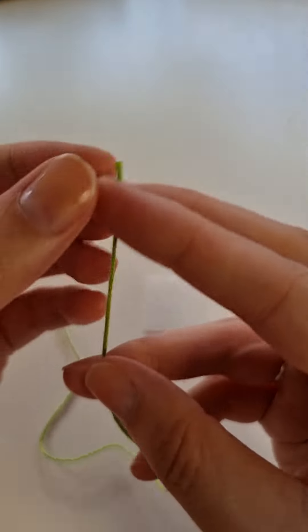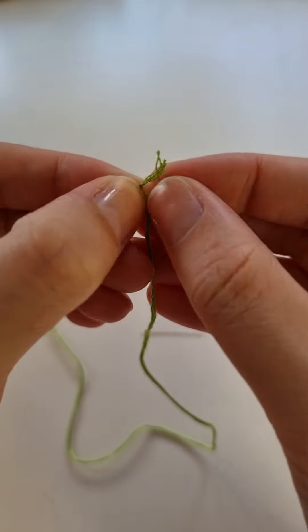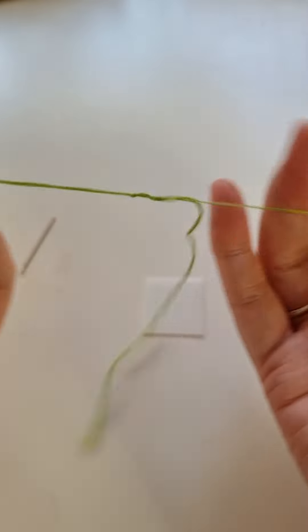To start off with you'll need to separate two threads from your strands. Each skein of thread comes in six strands so you'll need to separate out two each time you go to stitch.